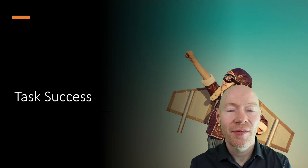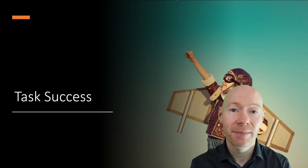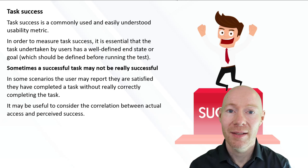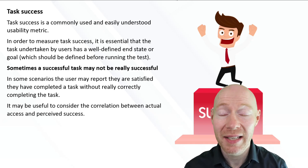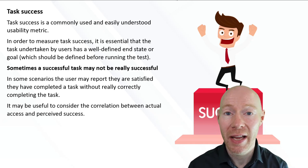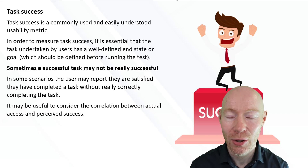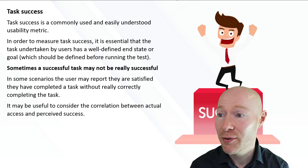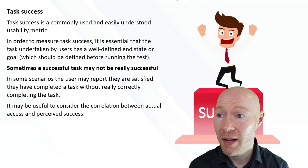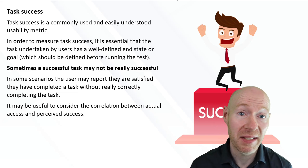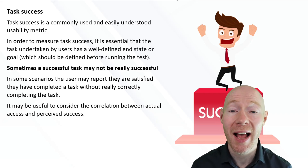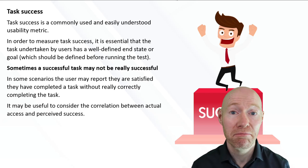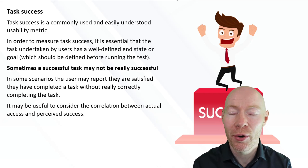Task success is the first of our performance metrics. It's arguably probably the most easily understood and certainly a very commonly used metric. Basically, it measures whether the user was able to do a particular task that was set — yes or no.